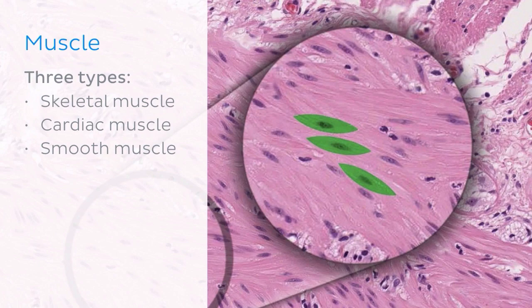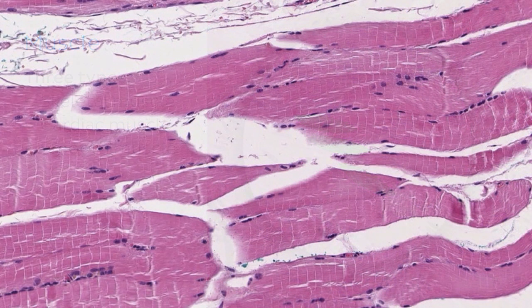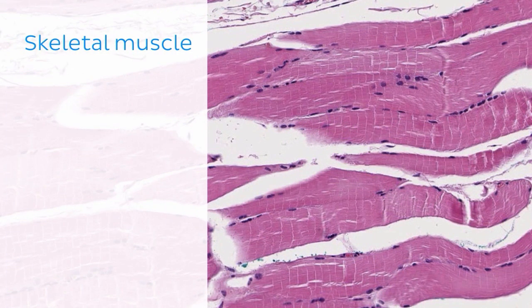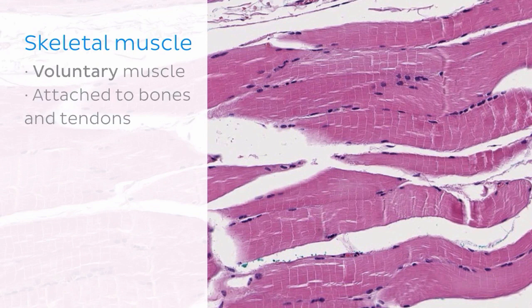Let's begin by talking briefly about skeletal muscle. Skeletal muscle, which you can see in the micrograph, is also known as voluntary muscle and is attached to bones and tendons. It's under the voluntary control of the somatic nervous system, or SNS.